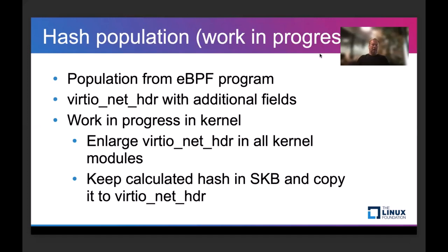Regarding hash population: we want to populate the hash from eBPF, but there are specific issues. We added additional fields in the VirtIO network header, but it's not enough. A lot of the time when we calculate the hash, the header still does not exist. So we have to keep the hash somewhere — probably in the SKB — and copy it later to the VirtIO network header. We also have to enlarge the virtnet header in all kernel modules. This is still work in progress; an initial set of patches was sent to the Linux kernel mailing list but we received reviews and are still working on the feedback.